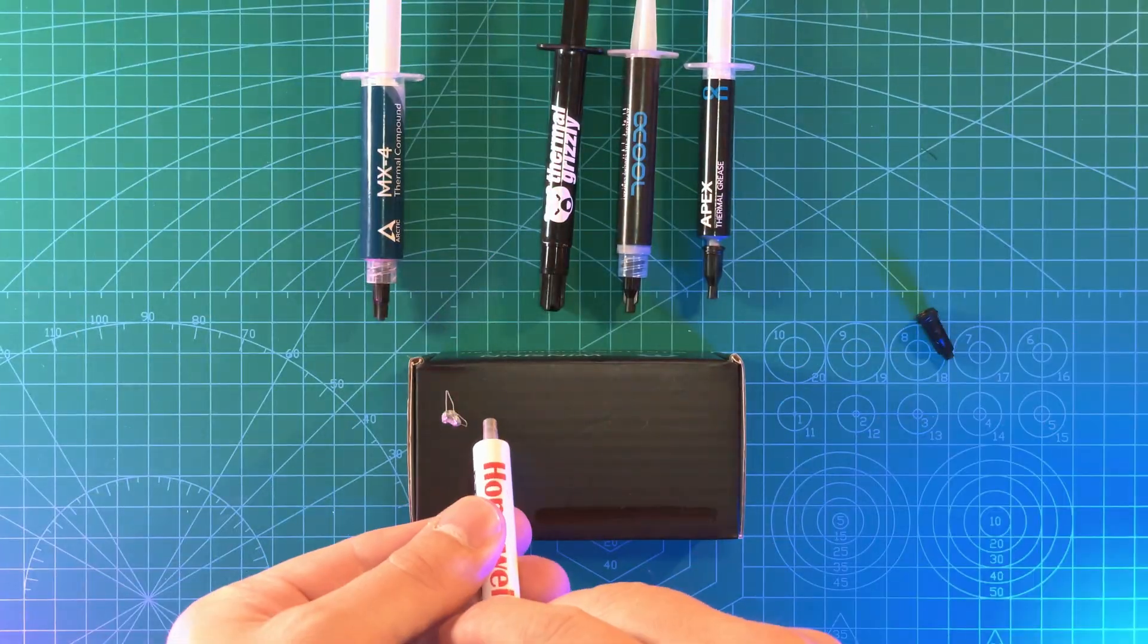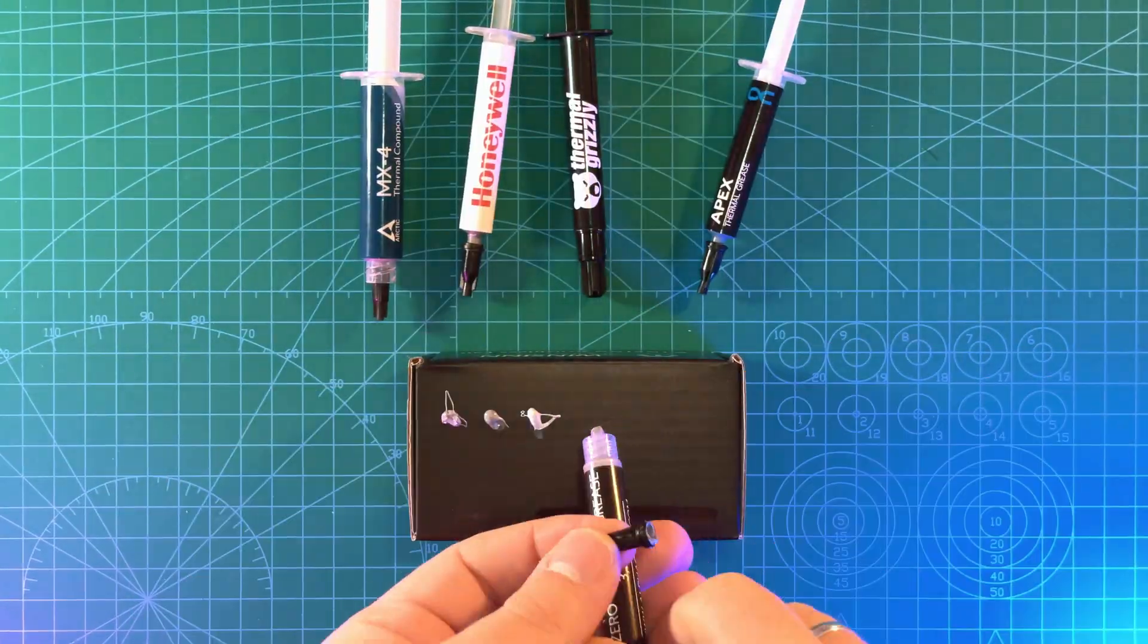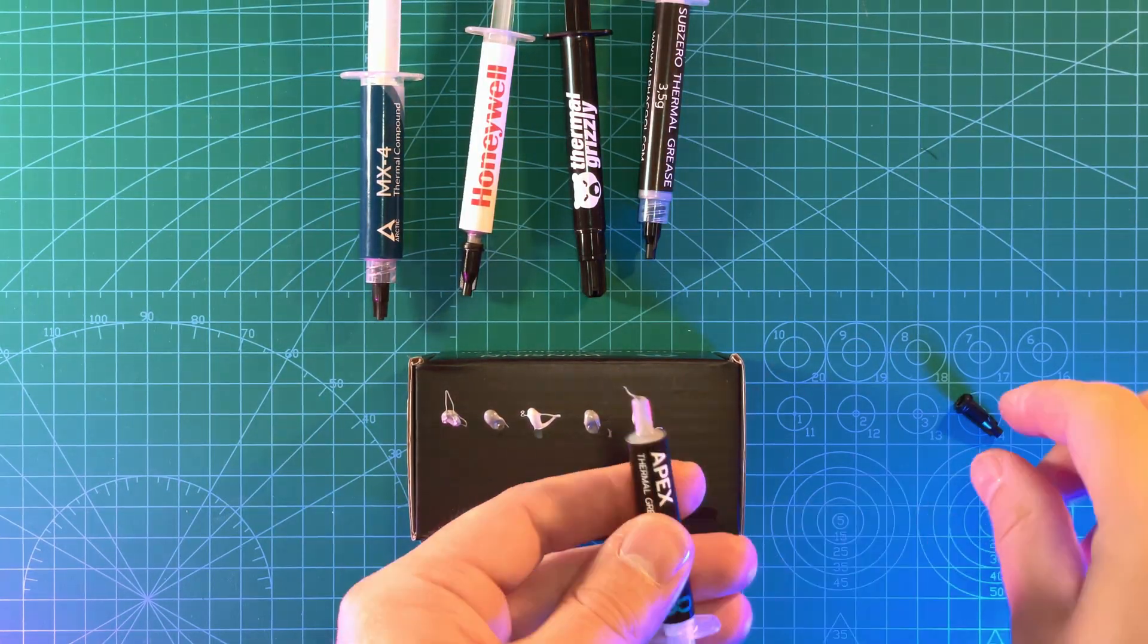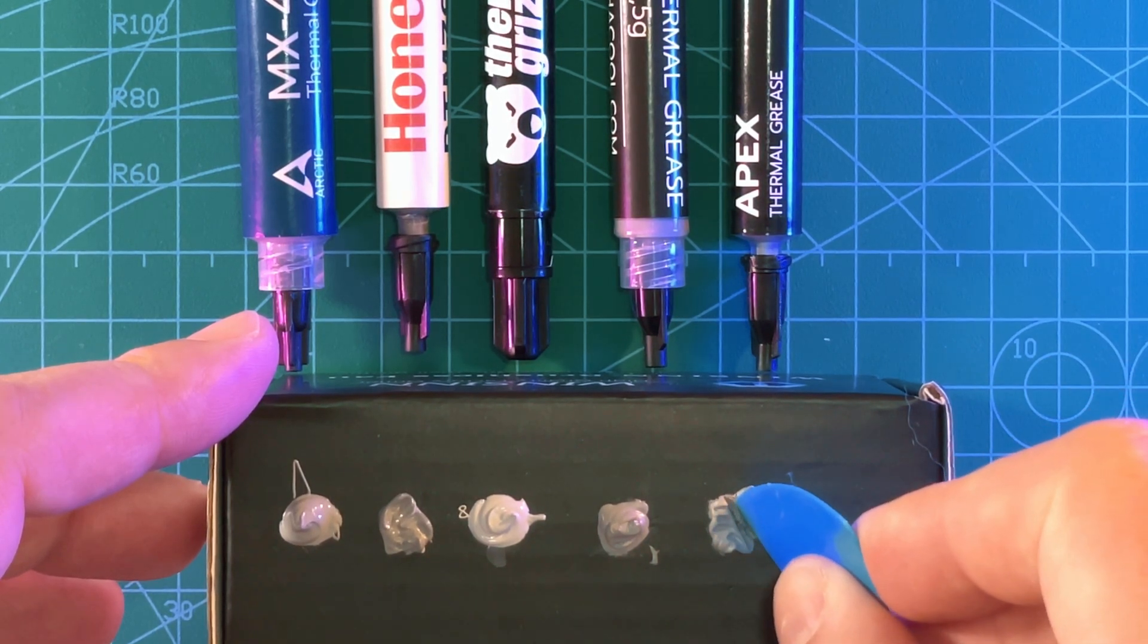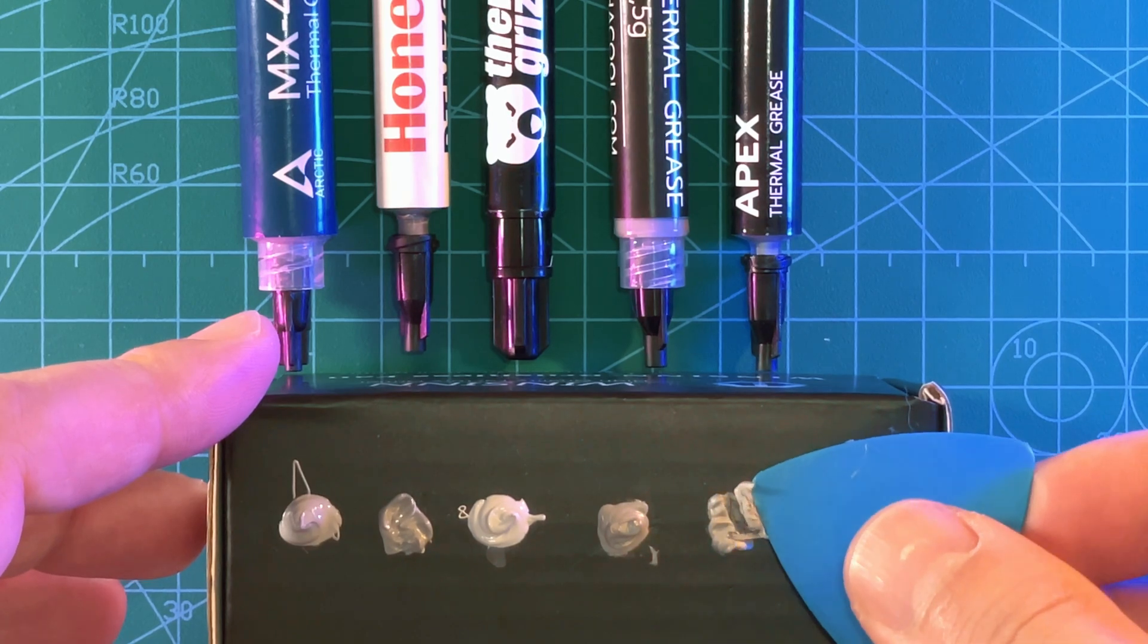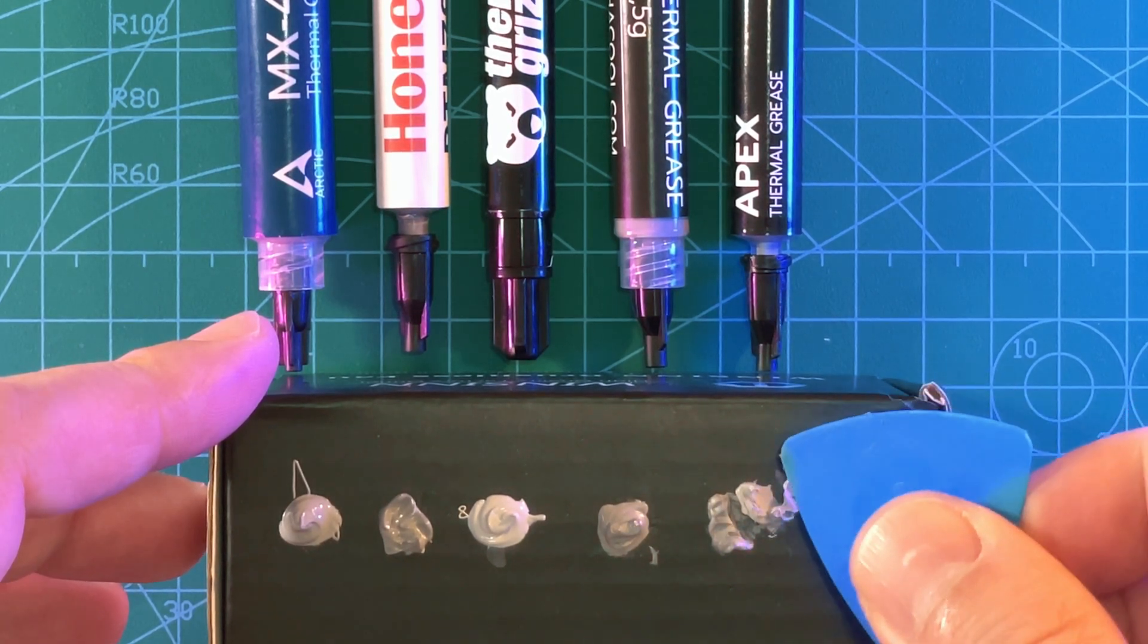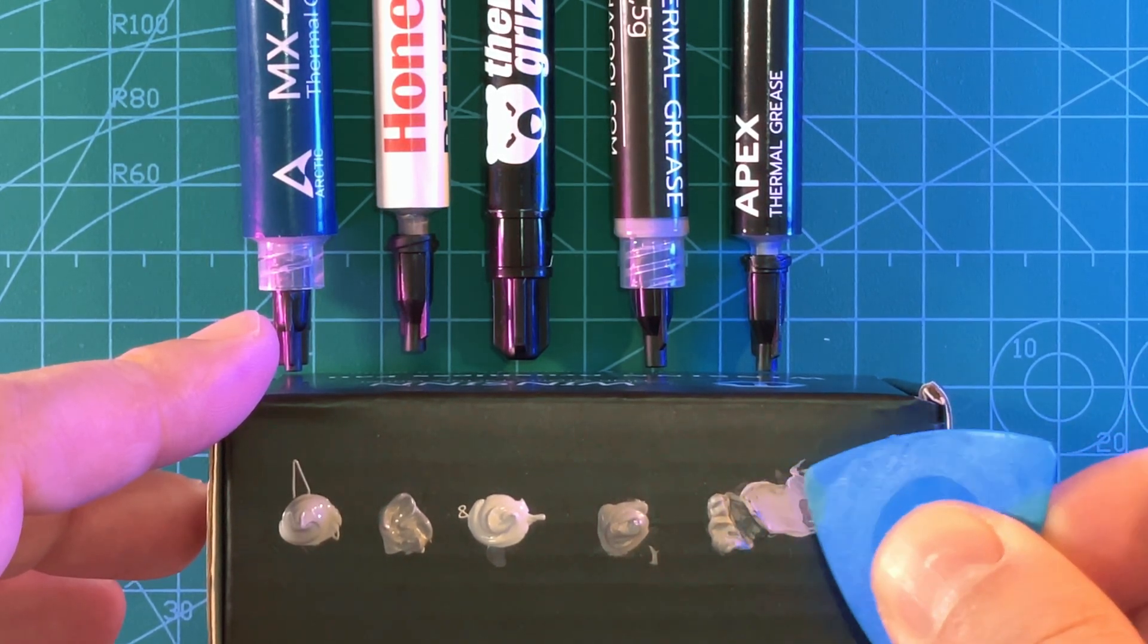Now we are going to take a look at viscosity and thickness of all five of them. First looking at Alphacool Apex, we can see that this paste is much thicker and easier to work with, while having high thermal conductivity at 70W per meter Kelvin, which is higher than any other paste that I am aware of.